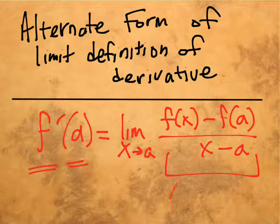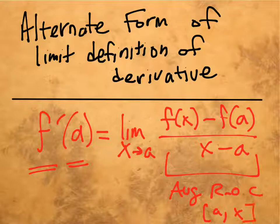And this quantity has a special name. This is called the average rate of change over the interval a to x. Normally we've seen this as the average rate of change over the interval a to b. That formula is f of b minus f of a, change in output, over b minus a, change in input. This is the exact same thing except the second input is called x and not b.